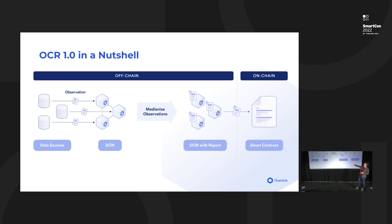The protocol works as follows: the DON makes observations of data sources, so every oracle observes an independent data source. In this example, they get prices — nine dollars, ten dollars, eleven dollars — back from the data sources. They then run the protocol, communicating observations to each other, and medianize them into a single report that every oracle ends up with.